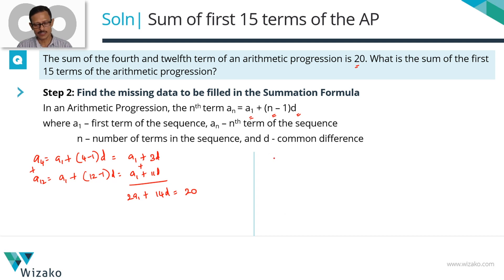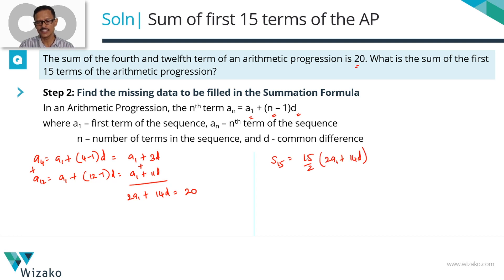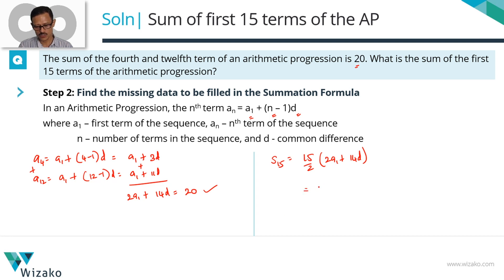Recall where we left the summation formula: 15 by 2 times 2A1 plus 14d. We said that if we can find the value of 2A1 plus 14d, we have the answer to the question. We have now computed that 2A1 plus 14d equals 20. So the sum of the first 15 terms is 15 by 2 times 20. That simplifies to 15 times 10, which equals 150.